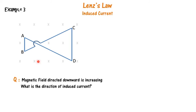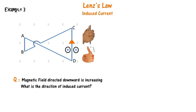Here we have a conducting loop placed in a magnetic field that is increasing in the downward direction, and we need to find the direction of the induced current. As per Lenz's law, the induced current opposes the change in flux. We assume the current flows from D to C; using the right-hand thumb rule, the magnetic field within the loop points upward — opposite to the downward external field — so this assumption appears correct.